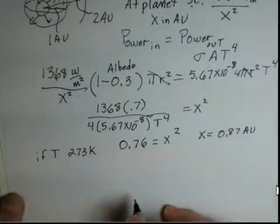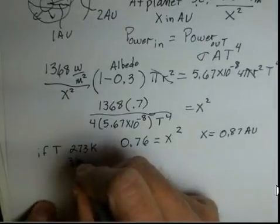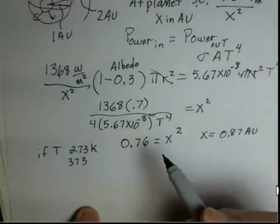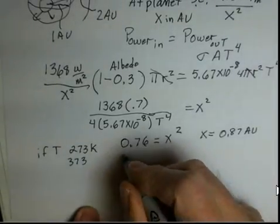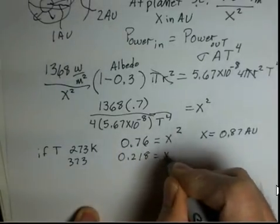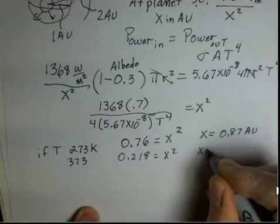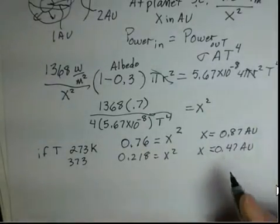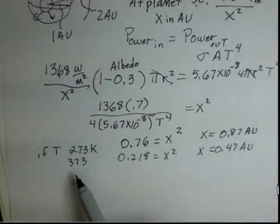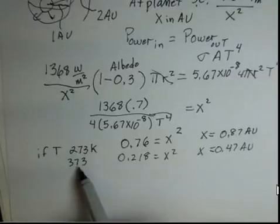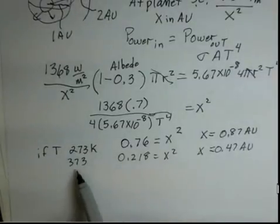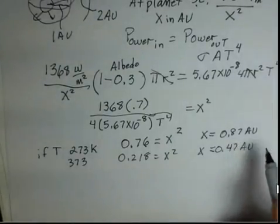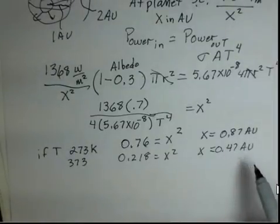I get 0.76 is our X squared, and then taking the square root of both sides, I find that X is 0.87 AU. For the case of 373, I now use 373 and square it twice. I came up with 0.218 is X squared, or X is 0.47 AU. Is it reasonable that X is smaller if I'm going for a higher temperature? Yes, closer to the sun will produce a higher surface temperature.